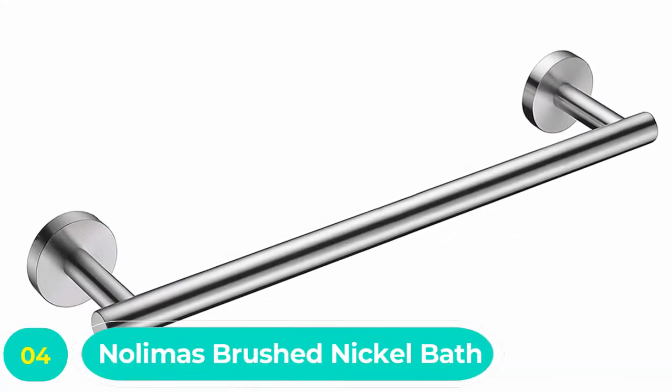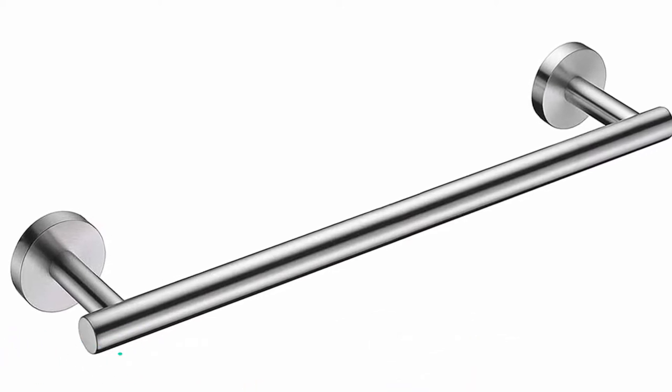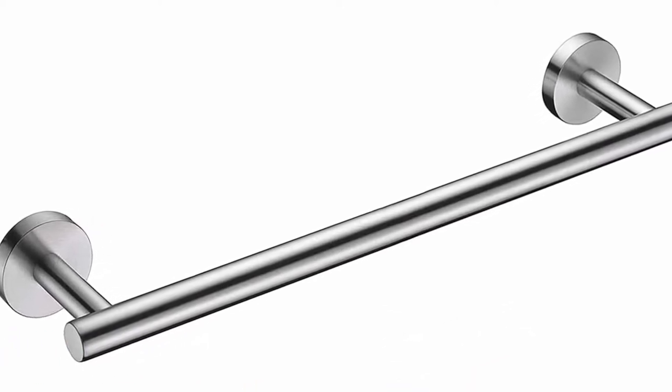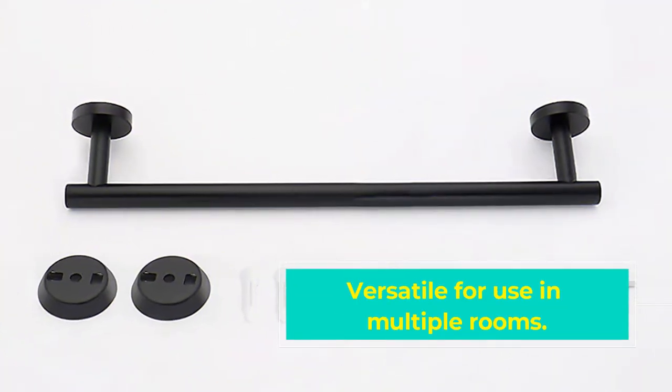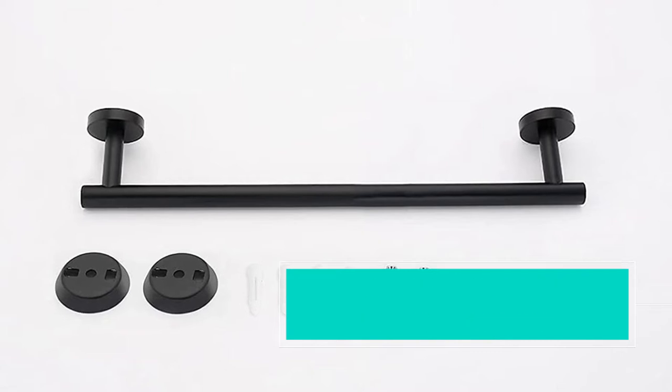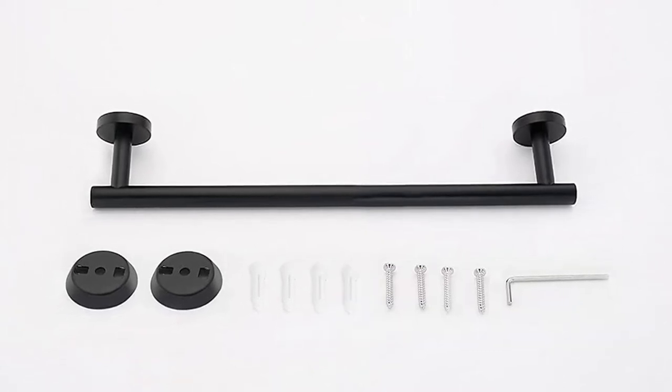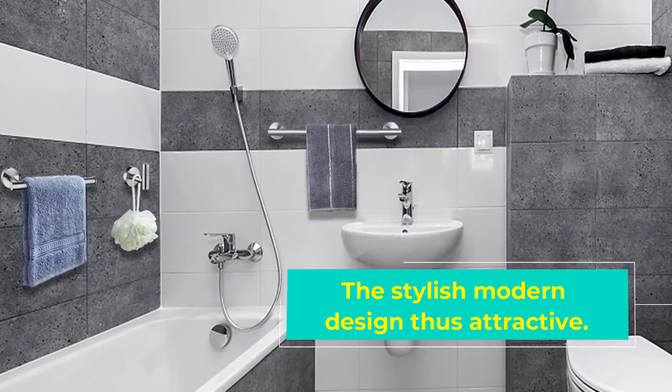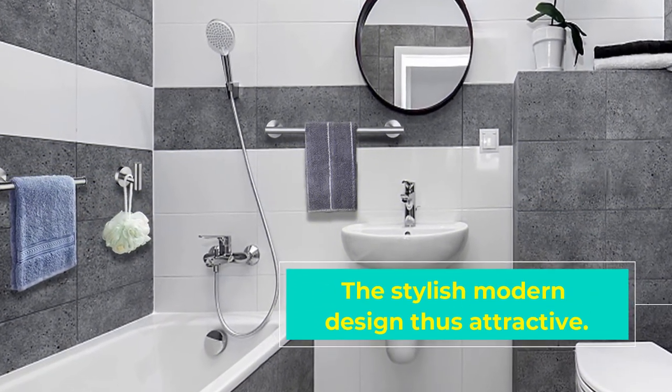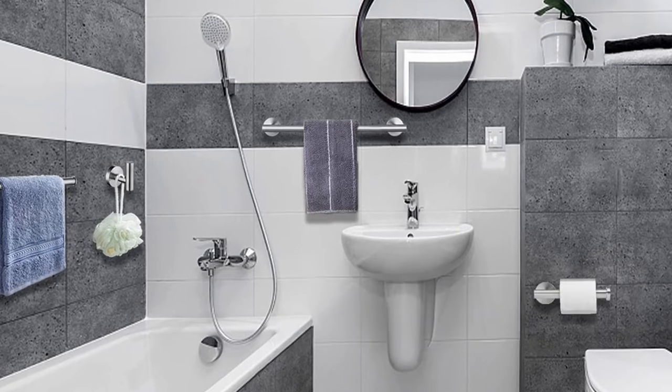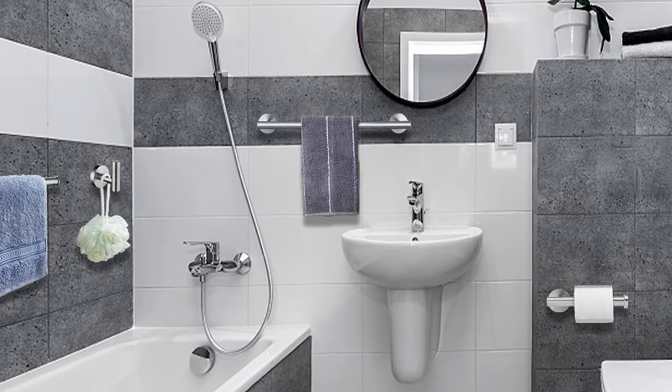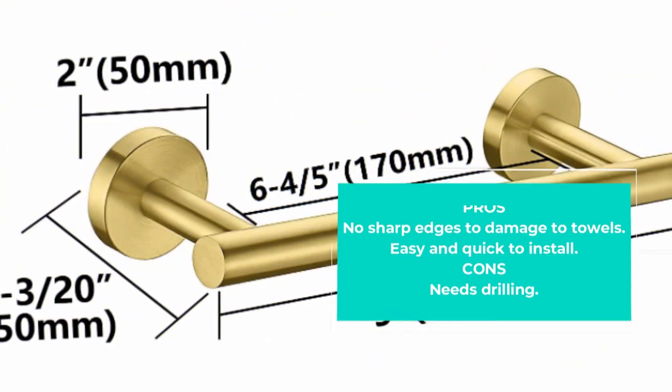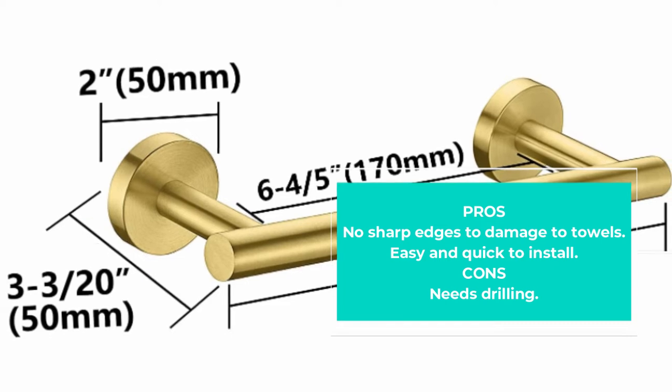Number four. It is a sleek design towel bar and a top choice on the list. It is an exciting towel bar with a brushed nickel finish. The bar can withstand heavy use and daily towel hanging. It is a modern design towel bar that adds some elegance to your bathroom. Furthermore, there are no sharp edges that can damage your towel. The bar boasts a smooth surface all through. It is a leading towel bar with premium stainless steel for durability and scratch resistance. Overall, this towel bar is quite easy to install and use. It is a versatile choice for use in the bathroom, kitchen, toilet, and living room.